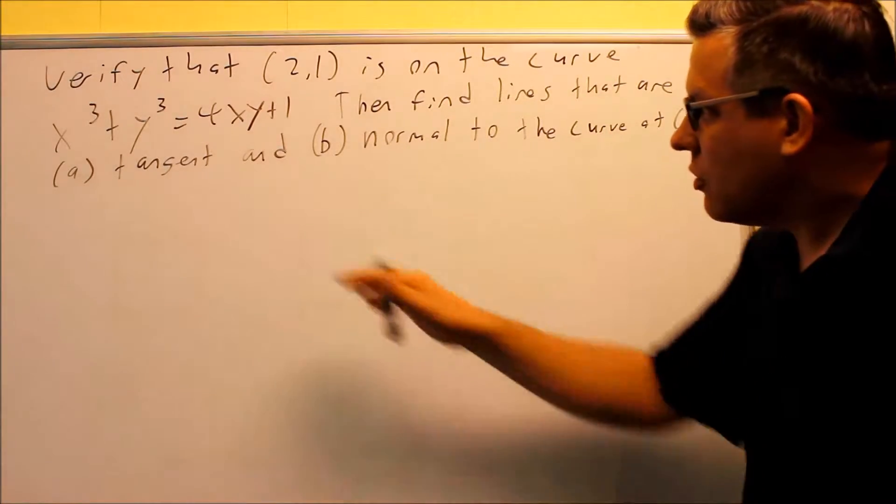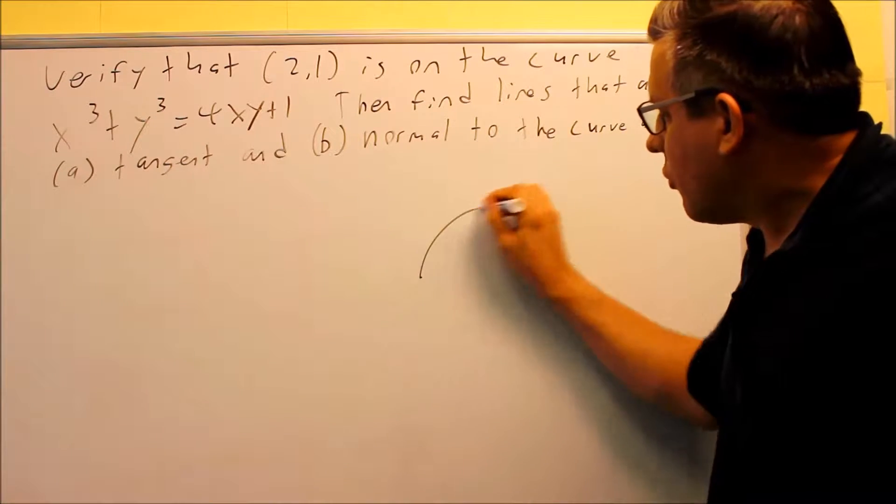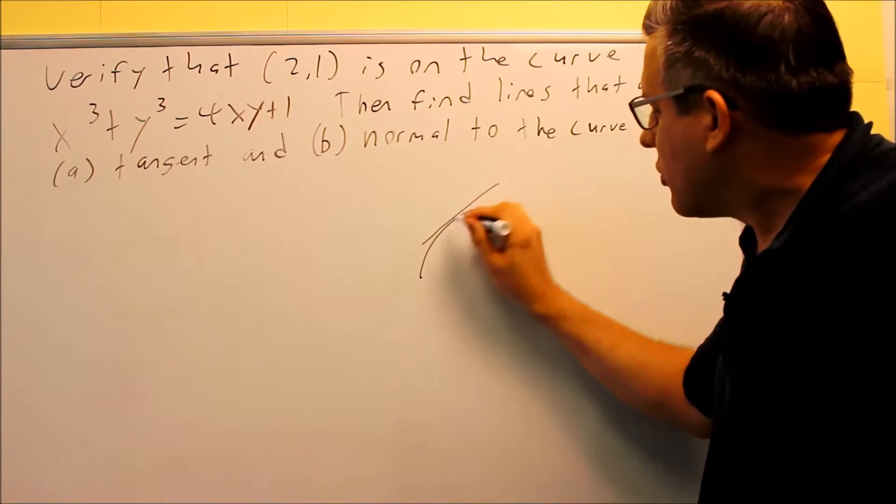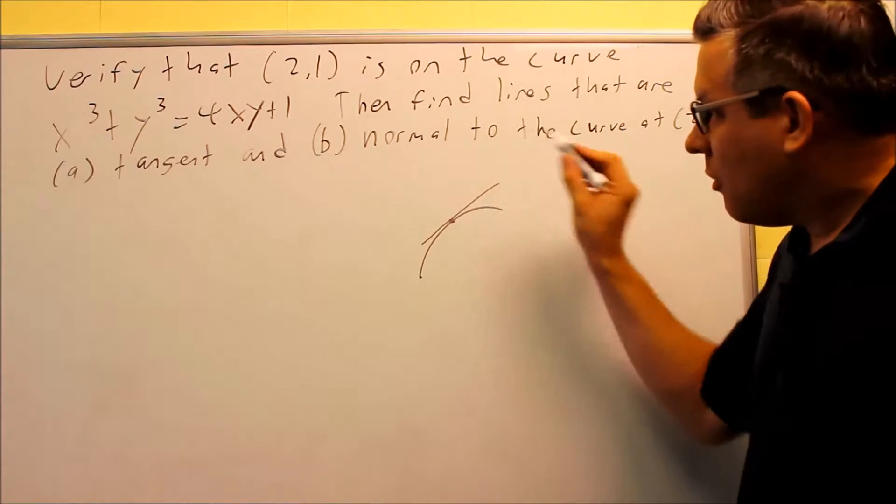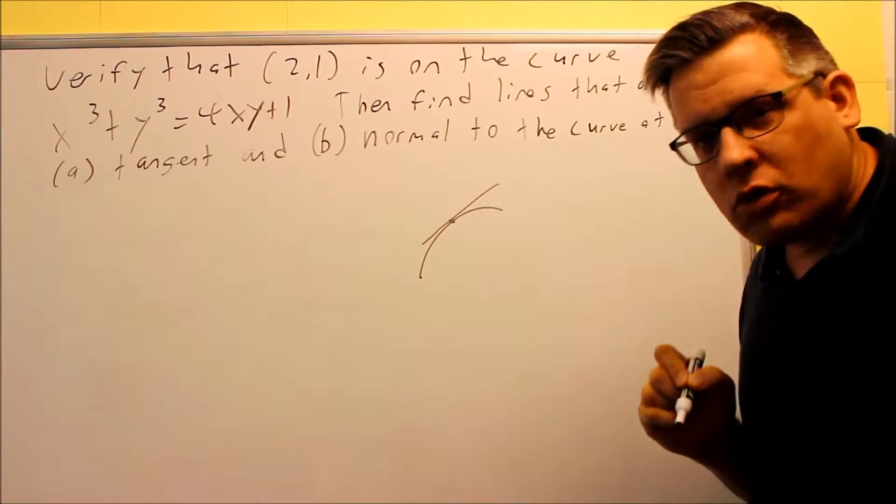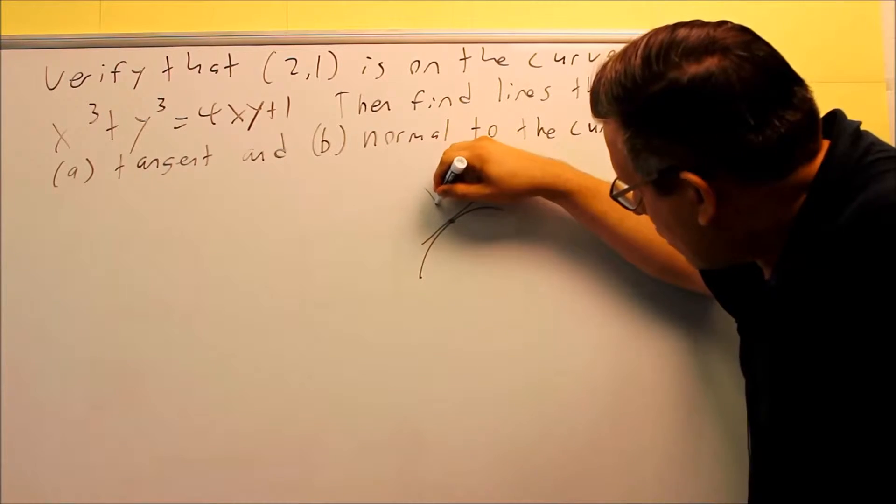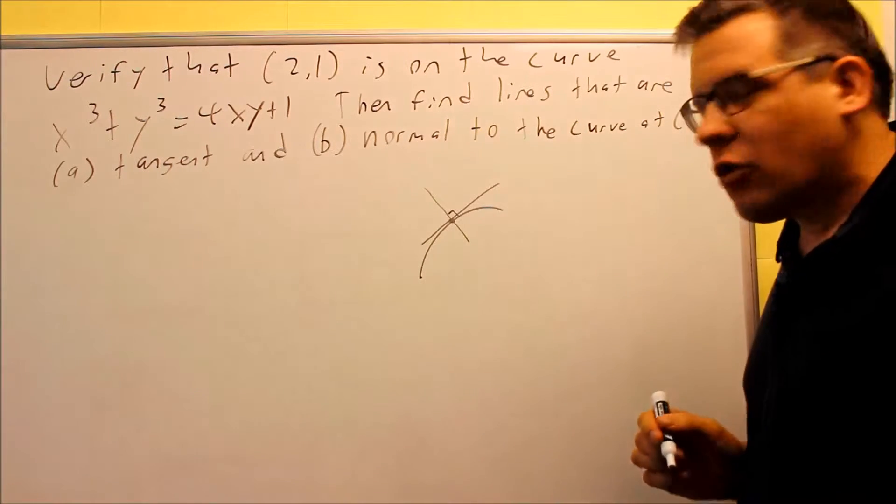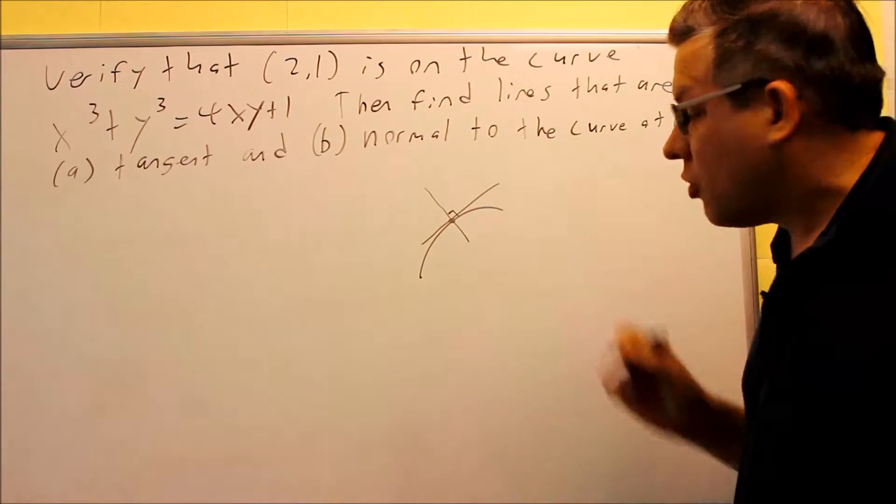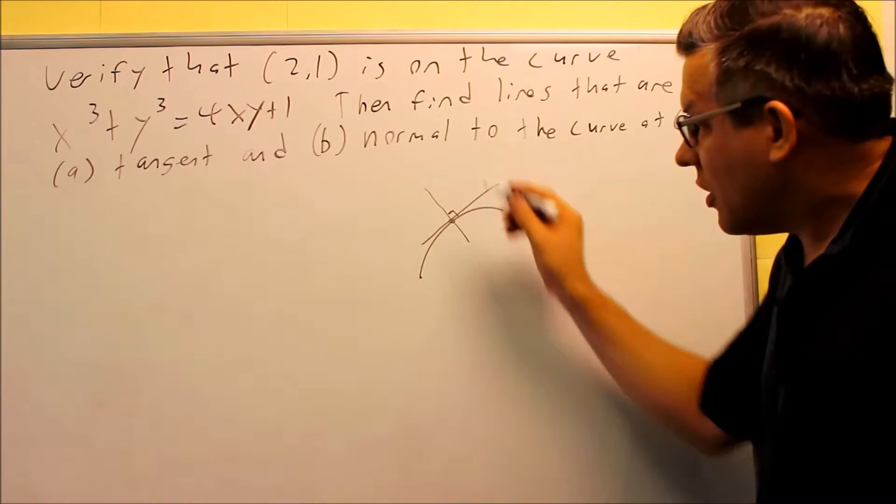So let me give you a little explanation of what these mean. Tangent, of course, we've talked about that before in a previous section. Tangent means that it touches the curve at only one point. What about normal? Normal means that it's going through that same point, but it's actually going to be hitting the graph at 90 degrees. So normal just means that it's crossing at a 90 degree angle.